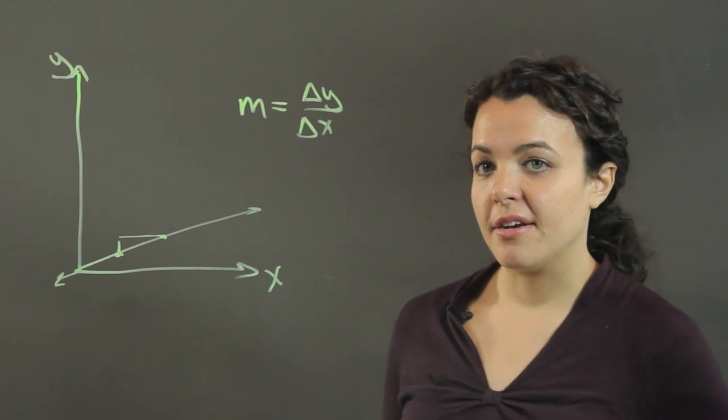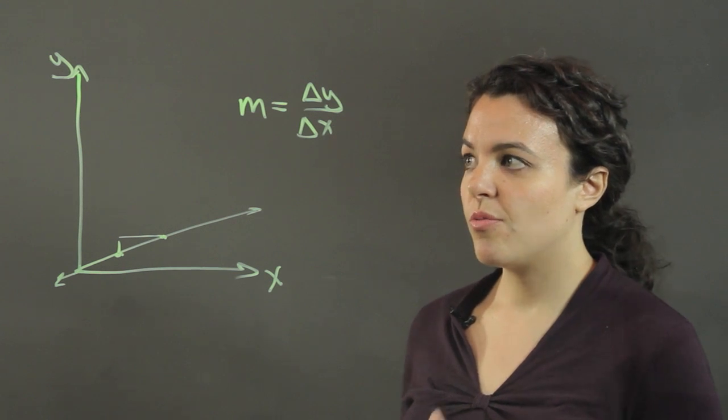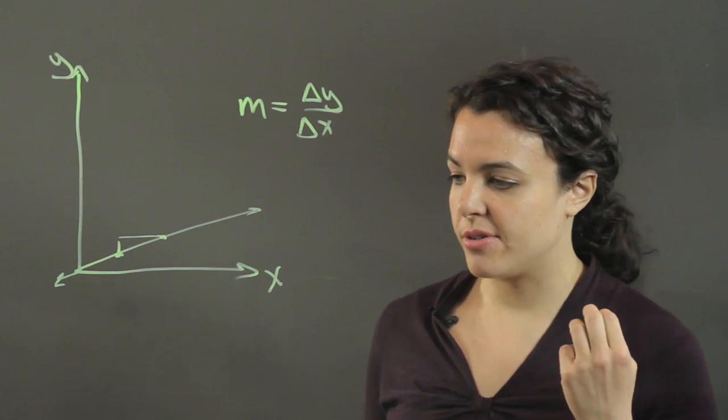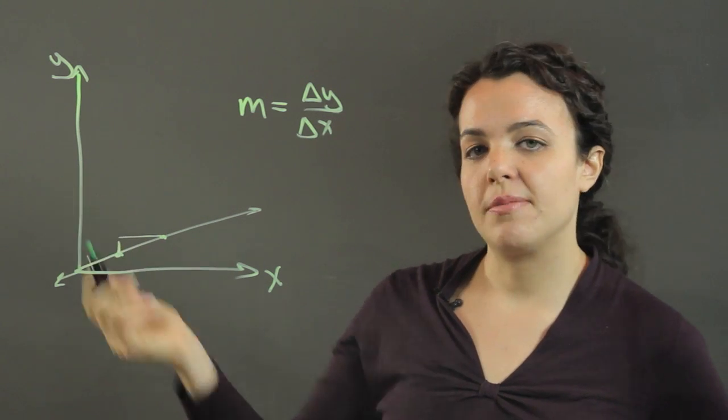Now the physical meaning of this is often a rate. You ask yourself, what are you graphing? What are the physical parameters that are being represented by x and those being represented by y?